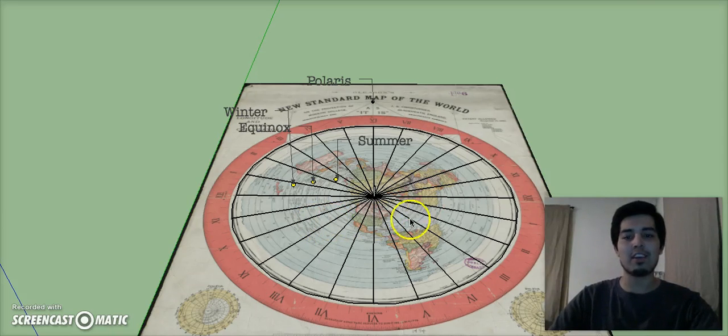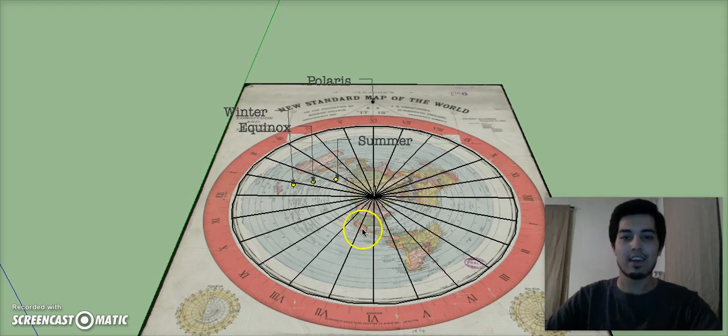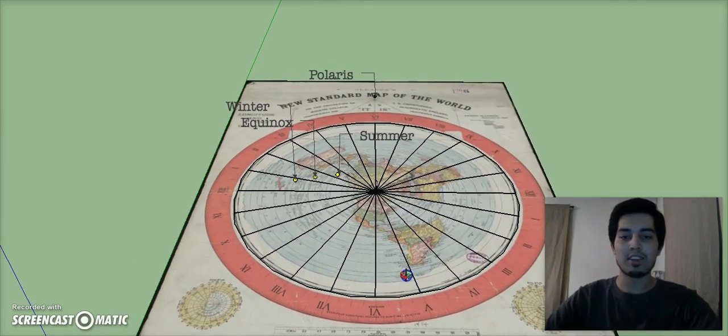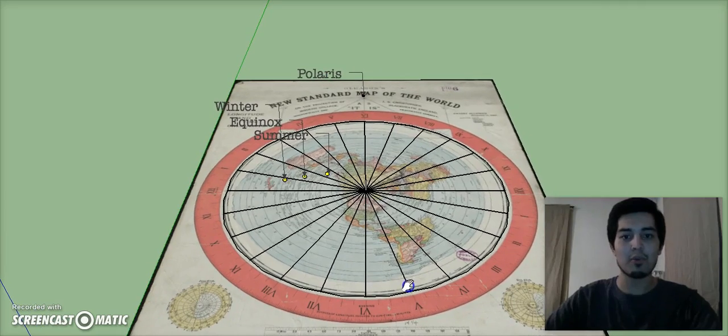Hey, what's up guys, Alex here again with another 3D model using Google SketchUp and today I'm going to be talking about the sun's movement during the seasons. I've made this nice little 3D model using Gleason's 1892 new standard map of the world.